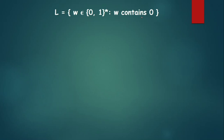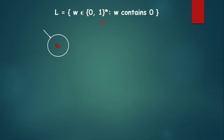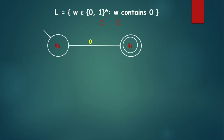Let us see the solution for the first language: strings w consisting of 0 and 1 where w contains 0. What is the simplest string? Zero itself — a single 0 contains 0, so it should be accepted. We always start our DFSM transition diagram with the starting state. Now, q0 upon 0 should end up in some accepting state. Can q0 itself be an accepting state? No, because if the string is epsilon (length zero), it doesn't contain 0. So q0 upon 0 we go to q1, which is marked as accepting. Our skeleton of the DFSM is ready.